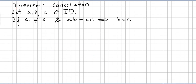We now have a new theorem: the cancellation theorem. Let A, B, and C be elements in an integral domain. If A is non-zero and AB equals AC, then that implies B equals C — so the cancellation law holds in an integral domain.